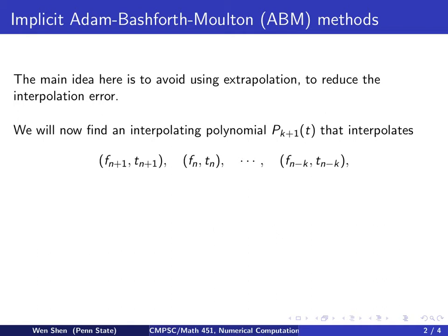Since we're going to approximate f with p at tn plus 1, we're going to include that point in our interpolation. Fix a k, and now we will have k plus 2 data points, starting from fn minus k, going all the way to fn, and including the extra point f at n plus 1, t at n plus 1. So k plus 2 points, which needs a polynomial degree k plus 1.